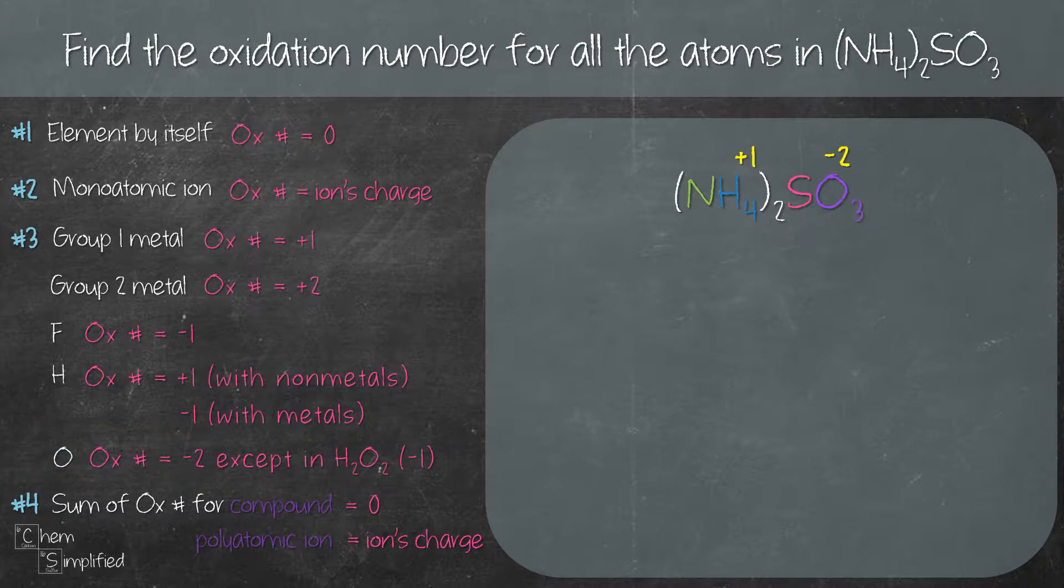In order to find the oxidation number of N and S, we'll need to first split them up into ions like this. So we have NH4+ and SO3 2-. Let's work on NH4+ first.